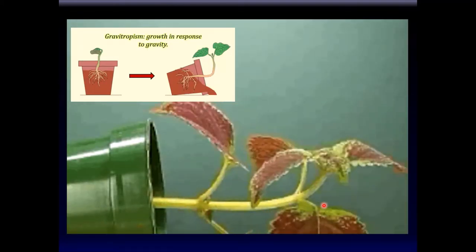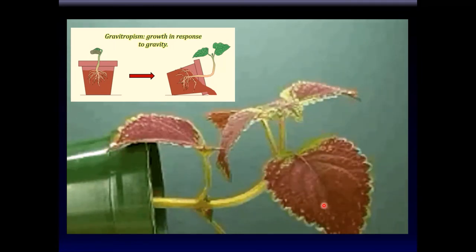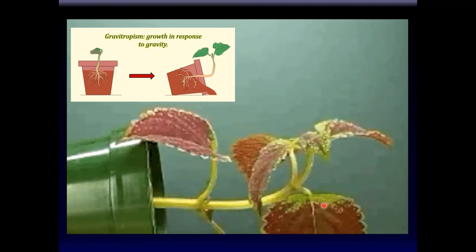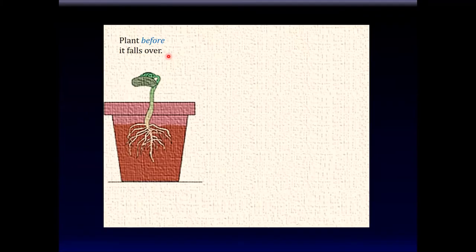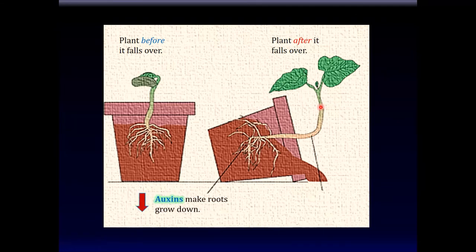In regard to graviotropism, as you can see in time-lapse, even if the pot were turned sideways, the plant adjusts its growth pattern so the stem grows towards the sky where the light is. As the plant falls, the roots adjust their growth pattern to grow towards the ground, and the stem alters its growth pattern to grow towards the sun so photosynthesis can continue. This response is mediated by auxins — plant hormones that we shall briefly study today. Auxins make the roots grow down and also make the stems go up.